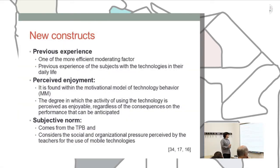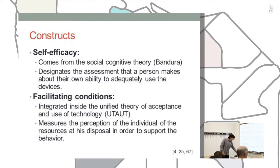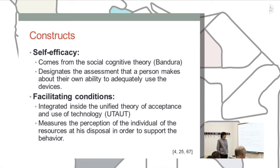The first construct is prior experience, considered by some authors as one of the moderating factors, defined in our model as the previous experience of the individual with technologies in daily life. The second is perceived enjoyment, which comes from Davis's motivational model, defined as the extent to which the activity of using technologies is perceived as enjoyable, regardless of anticipated performance consequences. The third is subjective norm, as explained earlier. The fourth is self-efficacy, from Bandura's social cognitive theory, which estimates the assessment a person makes about their own ability to adequately use the devices. The fifth is facilitating conditions, from the UTAUT model, measuring the individual's perception of available resources to support the behavior.